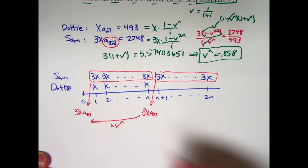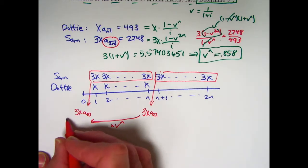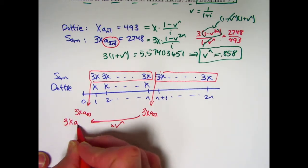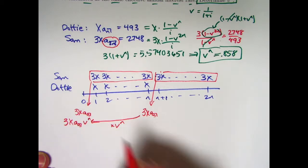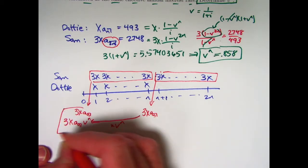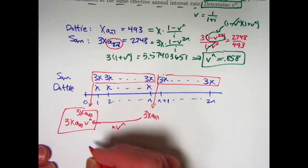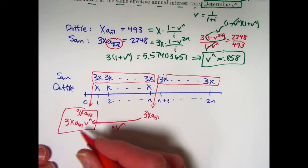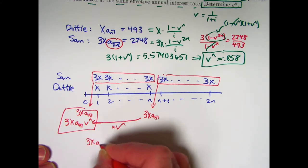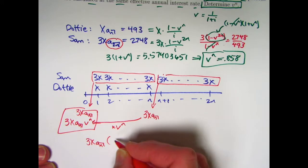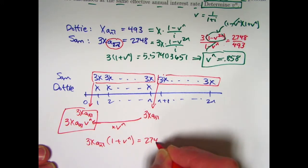And that will give me 3x a n times v to the n. And it's the sum of these two things, now that must equal 2748. And when I set that equal to 2748, I want to solve for x here. I can factor out a 3x a n, and then I'm left with a 1 plus v to the n equals 2748.